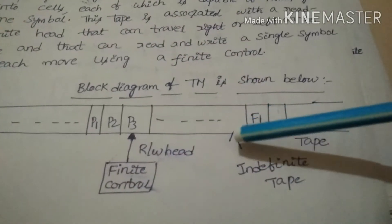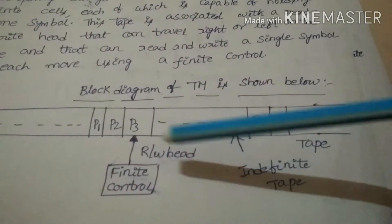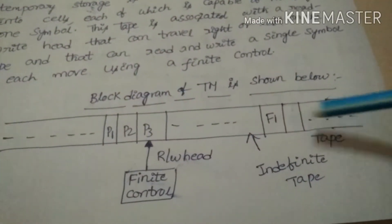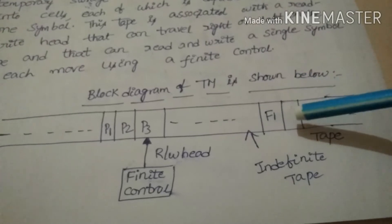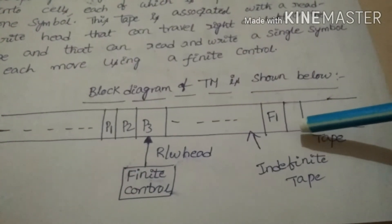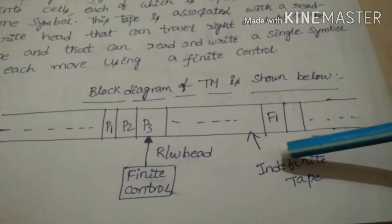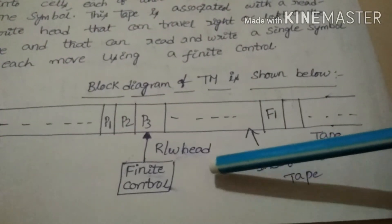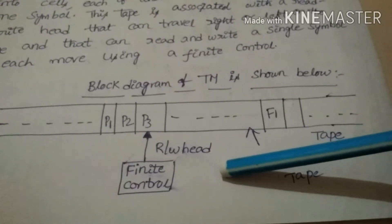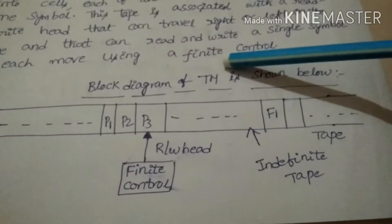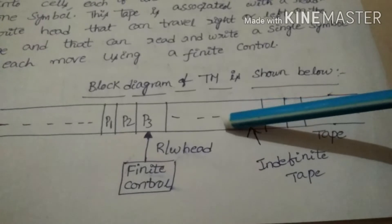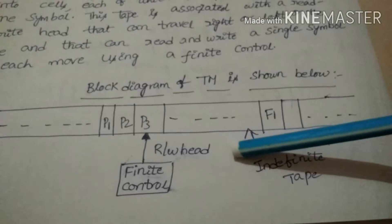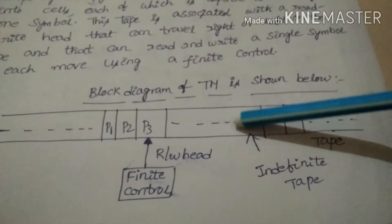The data is stored in the cells of the tape — P1, P2, P3, and so on up to F1. The finite control in the Turing machine is just like a buffer that keeps track of the next instruction to be executed. The structure of the Turing machine is similar to a modern computer, in which the memory acts as a tape and the processor acts as the read-write head.